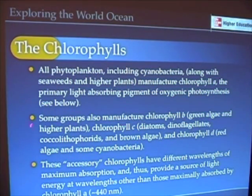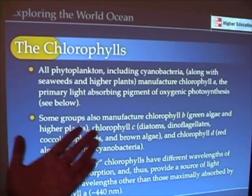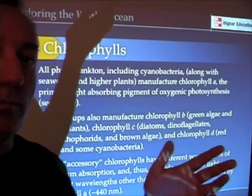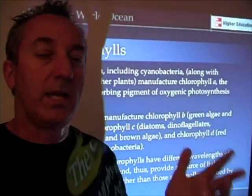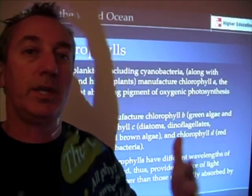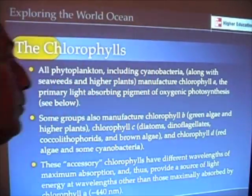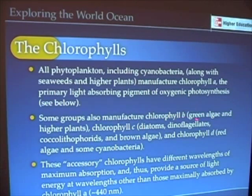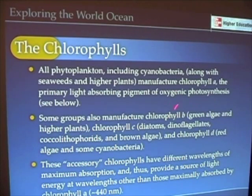Some of these organisms also produce other kinds of chlorophylls. It's really these other kinds of chlorophylls that make up the classification system and make up the differences between different kinds of phytoplankton, as well as different kinds of higher plants. Some produce chlorophyll B, primarily the green algae and the higher plants. So the sea lettuce we just looked at, and the tree outside your house, they have chlorophyll A and chlorophyll B.